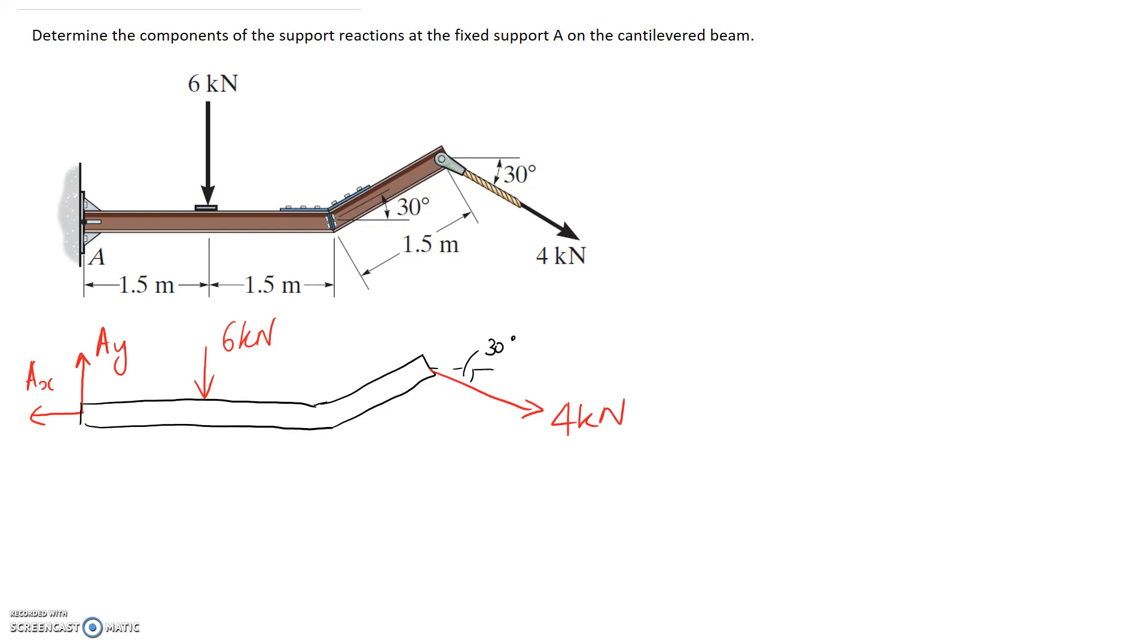And looking at the moment of course we're going to have a moment about this fixed support. Both this force and this force kind of look like they're going to try and rotate this beam clockwise. So I'm going to assume that our reaction moment is going to be anti-clockwise to oppose it. And of course if any of these come out to be negative that means that we just got the direction wrong and we can just flip it over on the diagram.